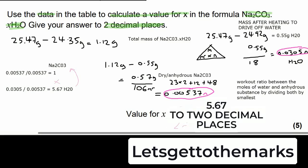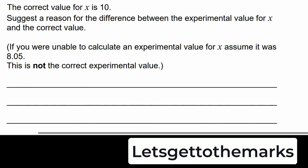The amount of water compared to sodium carbonate is 5.67. So the value for x is 5.67 to two decimal places.